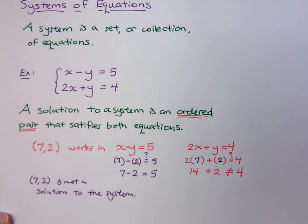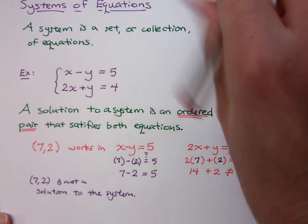Well, it's not a solution to the system, so we need to figure out how we can find what the solution is. Because guessing and checking is not going to be the best thing for us. It's going to be a waste of time, and you probably won't even end up with the right answer. So there are three methods that we have for solving a system of equations.